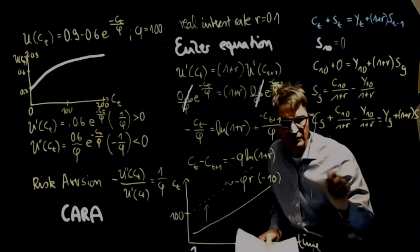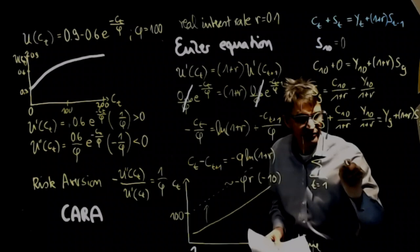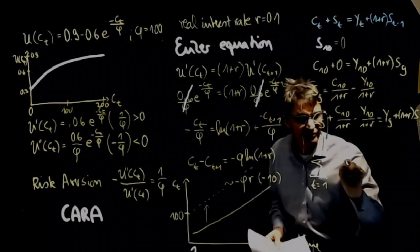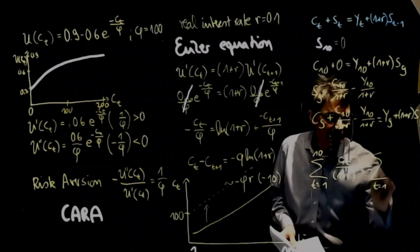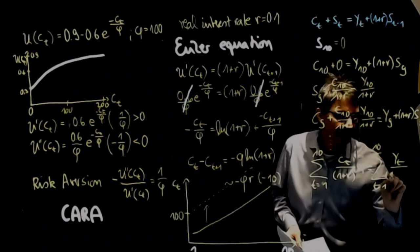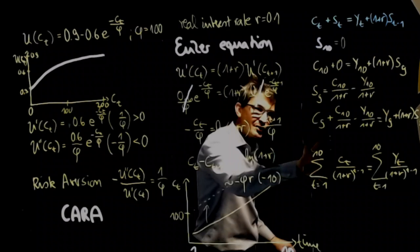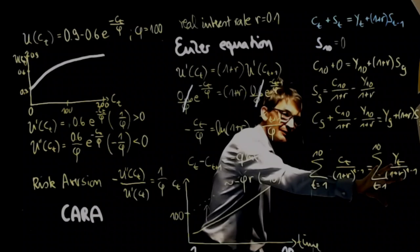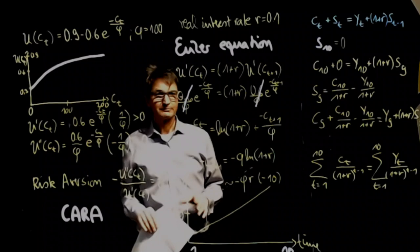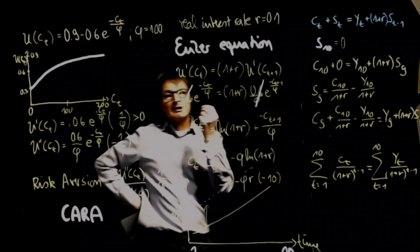And in the end, the restriction that we get is, from T from 1 to 10, the total consumption divided by 1 plus R to the power of T minus 1 must be equal to the sum from T from 1 to 10 of income divided over 1 plus R to the power of T minus 1. So basically what you see is, the only restriction that we have is the current value of consumption must be equal to the current value in time T of future income. So it's the two current values that must be equal.